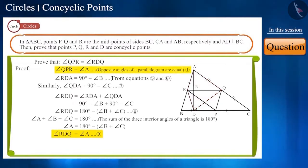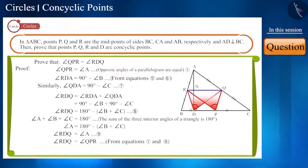Now, from equations 1 and 9, we can say that angle RDQ and angle QPR are equal. These two angles are the angles subtended by the line segment RQ on point D and point P. Therefore, we can say that points P, Q, R and D are concyclic points.